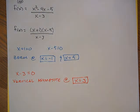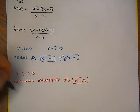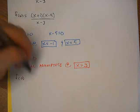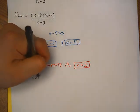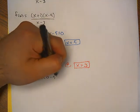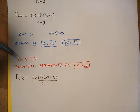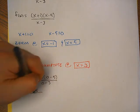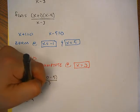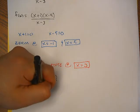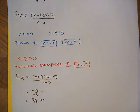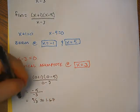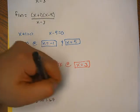The next step is going to be to find our y intercept — probably the easiest one. To find our y intercept, I figure out what f of 0 is. F of 0 is equal to 0 plus 1 times 0 minus 5, divided by 0 minus 3, which equals negative 5 over negative 3, which is simply 5 over 3. Five over 3 is approximately 1.67, and that's our y intercept.